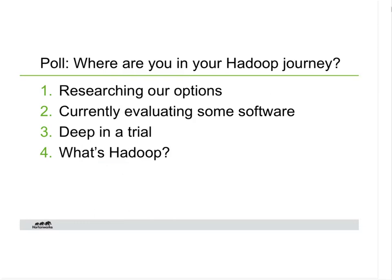Option one: researching options — you're just beginning the process and trying to figure out Hadoop. Option two: evaluating Hadoop, whether Apache Hadoop, Hortonworks, or another vendor. Option three: deep into trial — you've spent some time, identified use cases, and started proof of concept work. Option four: just heard about it — it's got a funny name and you need to learn more.